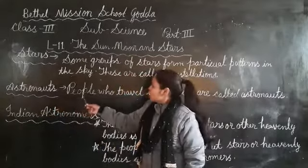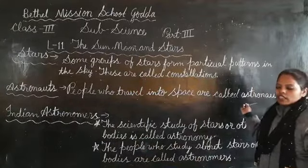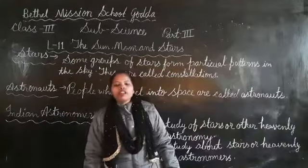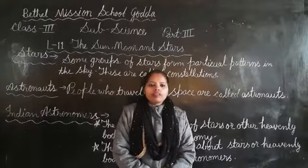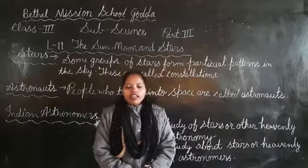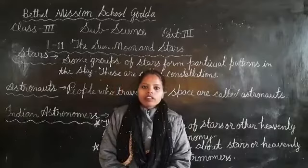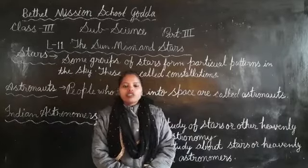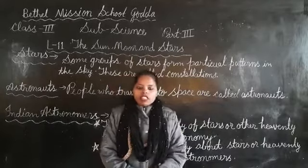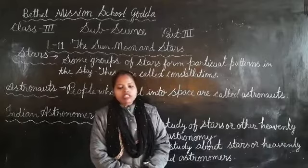Next is astronauts. People who travel into space are called astronauts. The first men who landed on the Moon were Neil Armstrong and Buzz Aldrin, and they landed on 20th July 1969 in the Apollo 11 spacecraft.